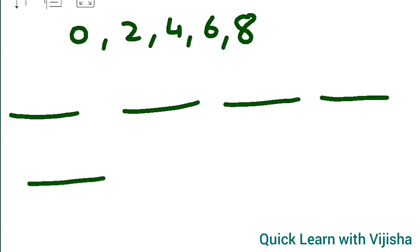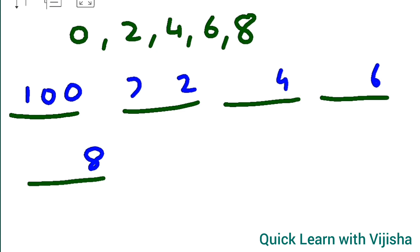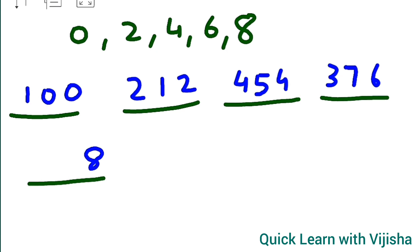These numbers must have 3 digits. In the units place we will put 0, 2, 4, 6, and 8 respectively. For the tens and hundreds place, we can use any numbers. I will write: 100, 212, 454, 386, and 408. The units place determines divisibility — that is your key here.